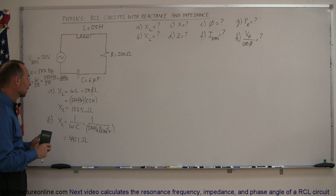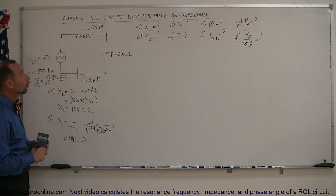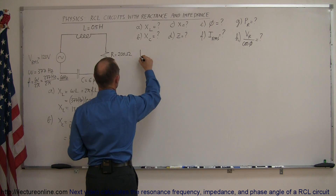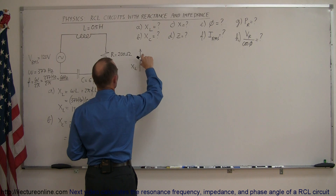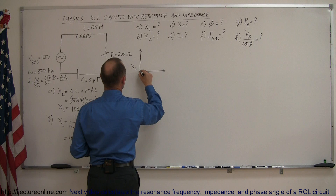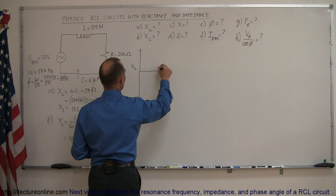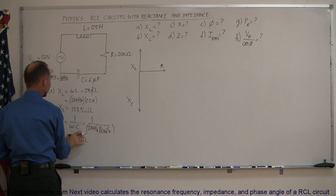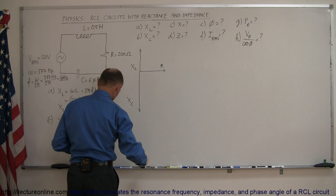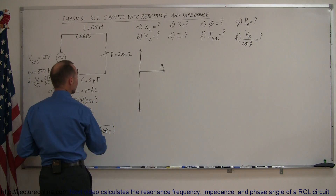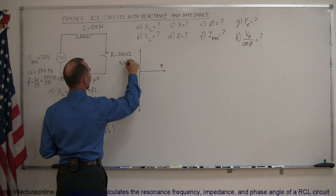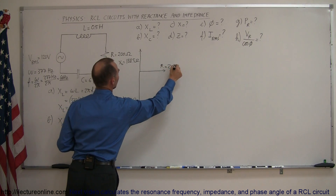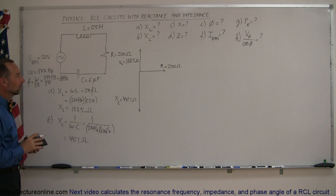The third part is finding the total reactance. Before we do that, I'm going to draw a phasor diagram. We draw X sub L in the upward direction, because the voltage across the inductor leads the voltage across the resistor. Then we have the resistance, and then we have the capacitive reactance X sub C pointing downward. Notice that the length of the vectors are approximately proportional to the values: X sub L is 188.5 ohms, X sub C is 442.1 ohms, and the resistance is 200 ohms.